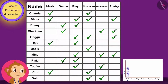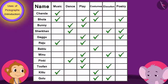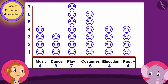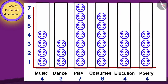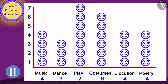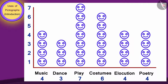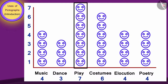Babban looked at his table and immediately understood. Appu said, well done, Babban, you understood. Now, take this pictograph and tell me, which program has the most children participating in it? Children, can you see this pictograph and tell which program has the maximum number of children participating? The tallest line here is of seven faces, which are placed on top of the play program. This means that the maximum number of children have participated in the play.